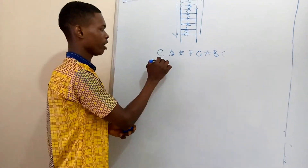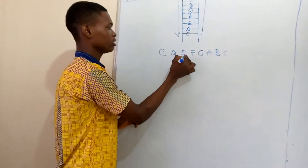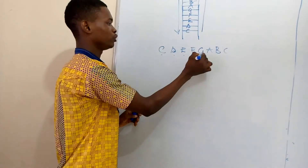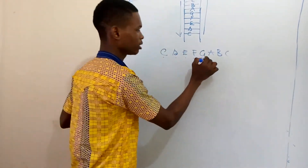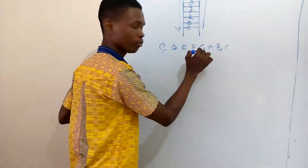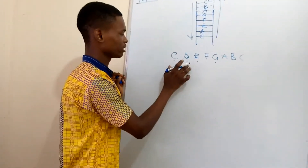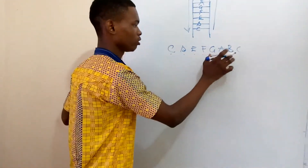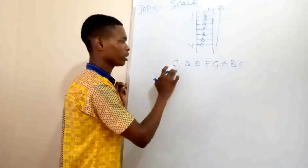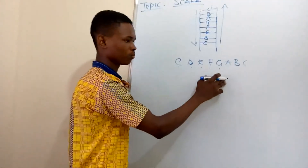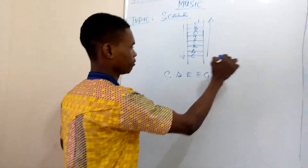It is arranged alphabetically: C, D, E, F, G, A, B. Remember, in music when we get to G, we go back to A. So a scale is an arrangement of notes in alphabetical order from a note to its octave.